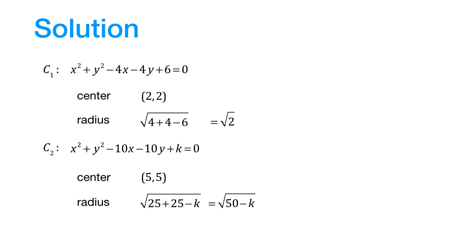Let us also find out the distance between the two centers. By the distance formula, c1 c2 is equal to this expression which simplifies and equals 3 times the square root of 2.